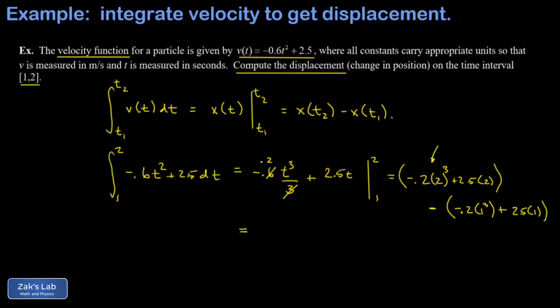In this first term I have 0.2 times 2 cubed, which is 0.2 times 8. That gives me 1.6, and there's a minus sign in front of it. Second term, 2.5 times 2 is 5.